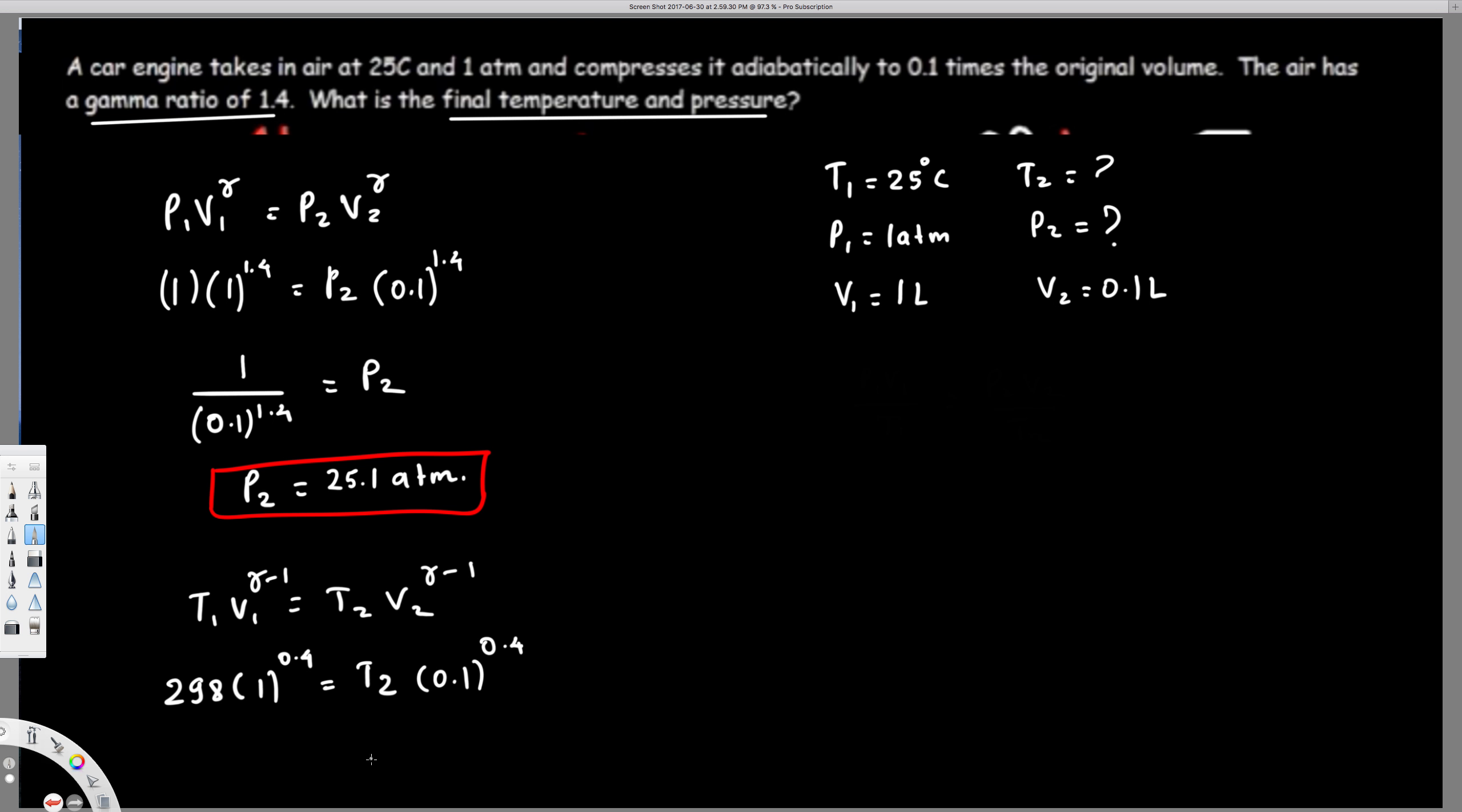This equals T2, that's what we're trying to find, times V2 is 0.1^0.4. From this, this is just one and this value is something else. So let's plug this in: 298/(0.1^0.4), and that will give you 748.5 Kelvin, and that's going to be T2.